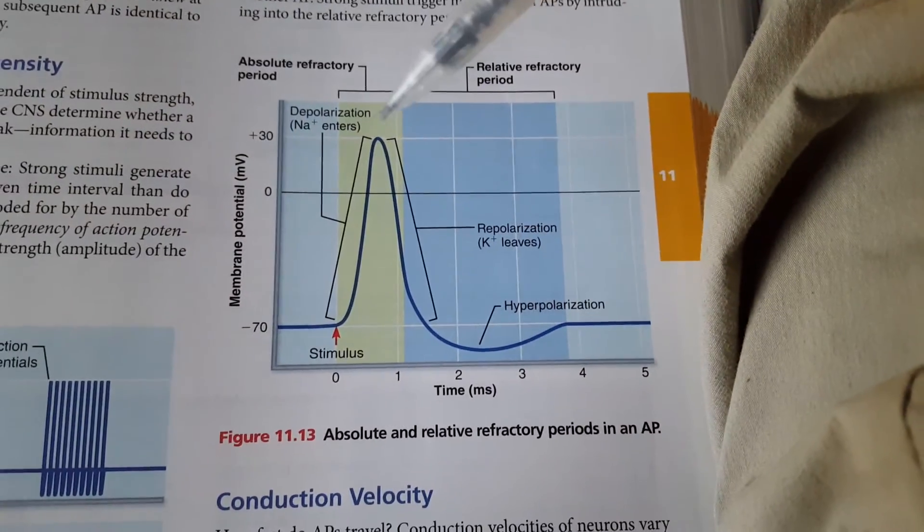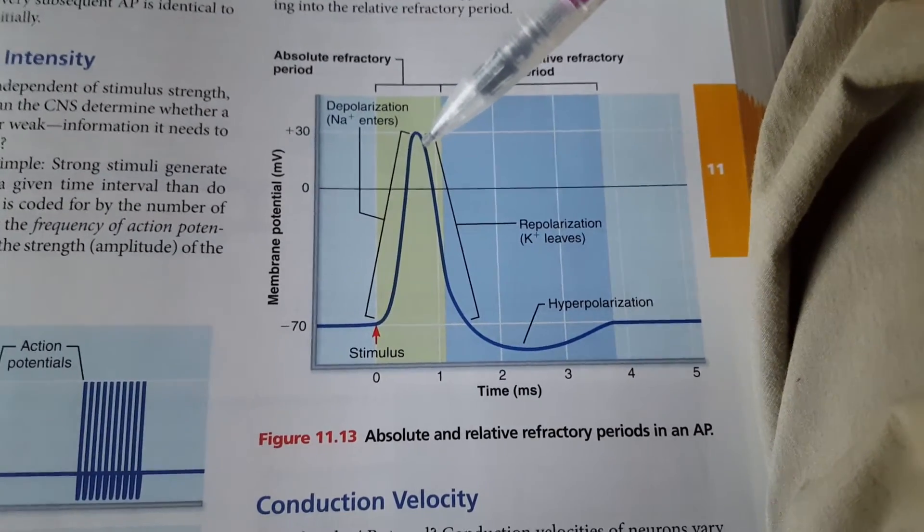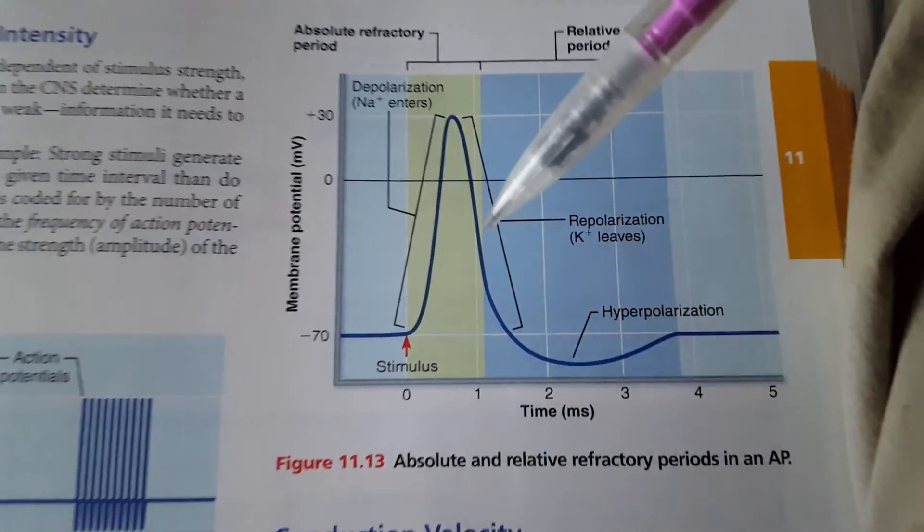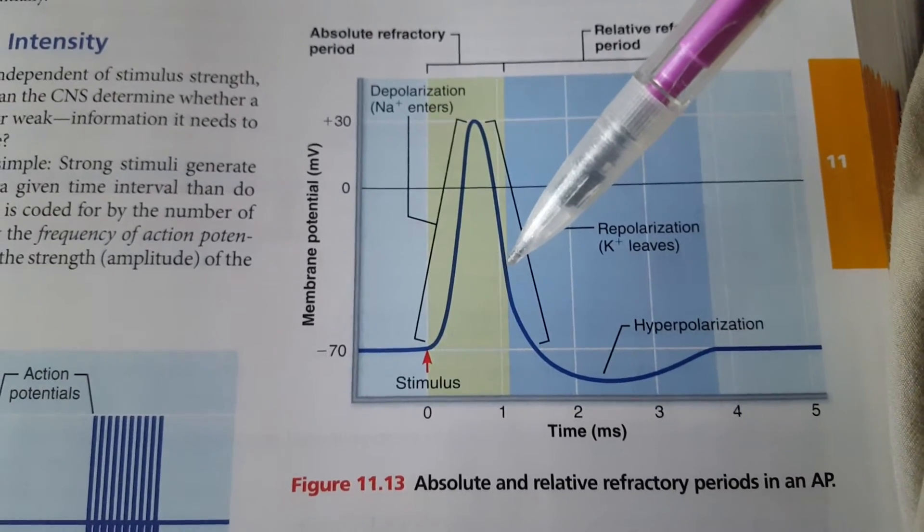Now when we look at neurons, remember that when depolarization is occurring, you can't depolarize again. And even during repolarization, the membrane has to hit a certain point before it could be stimulated with a greater than threshold stimulus to get an action potential.